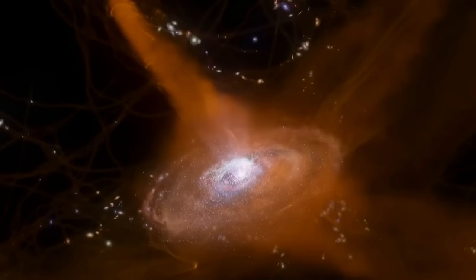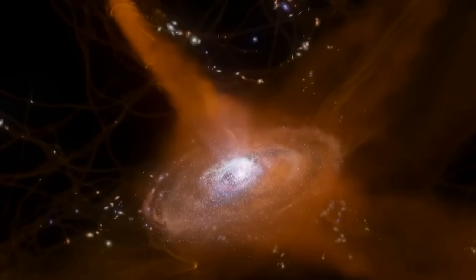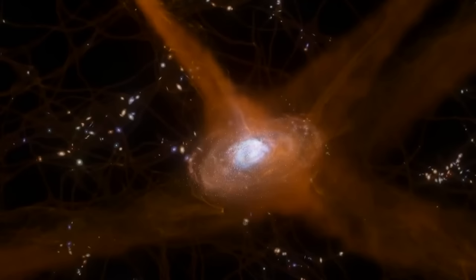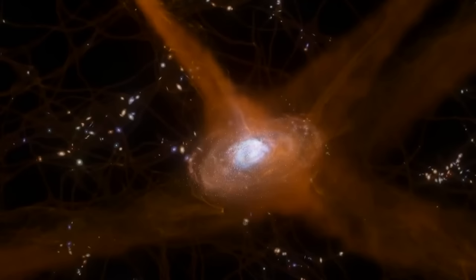This black hole does not eject material into space at extreme speeds, but offers a gentle flow whose speed is only about 1.6 million kilometers per hour. Thus, it allows the captured and then compressed gases to be precipitated at less intense temperatures, allowing them to form new stars in even denser clusters.